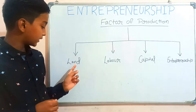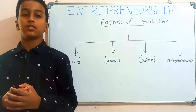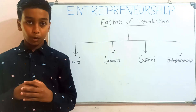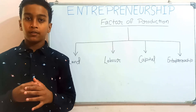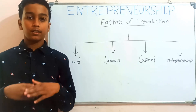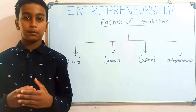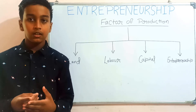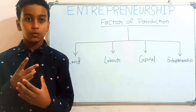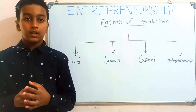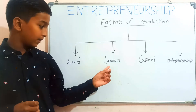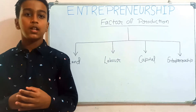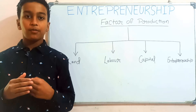Land as a factor of production: land is a broad term that includes all the natural resources that can be found on land, such as oil, gold, water, and vegetation.